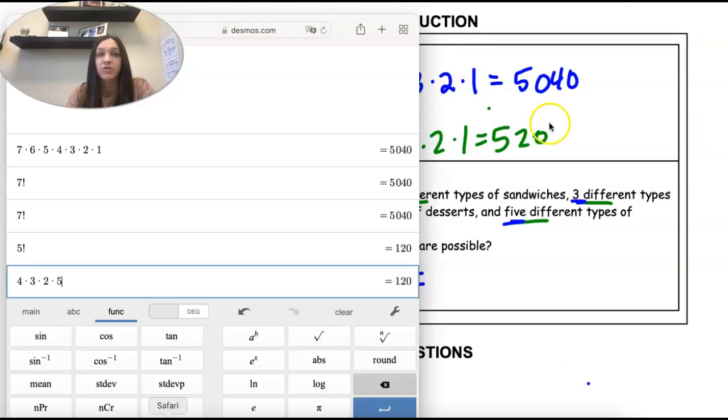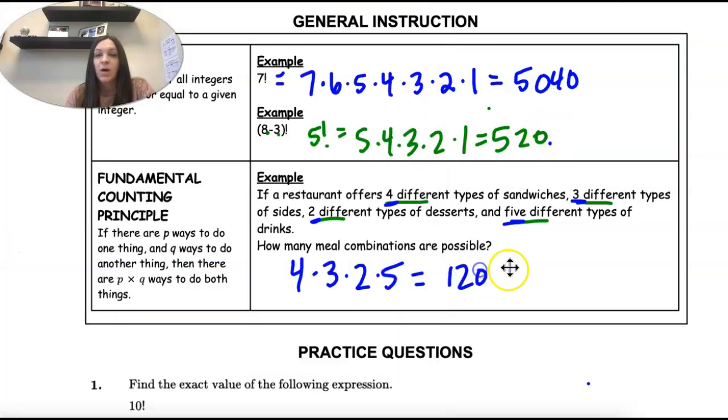So there are 120 possible combinations on their menu. And that's called the counting principle.